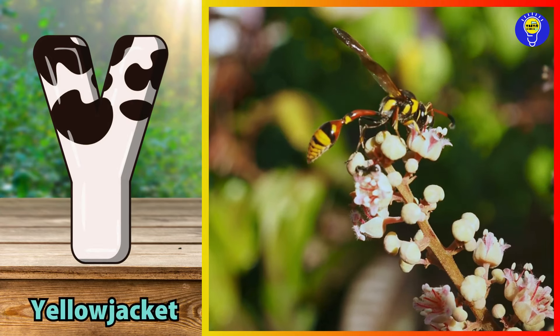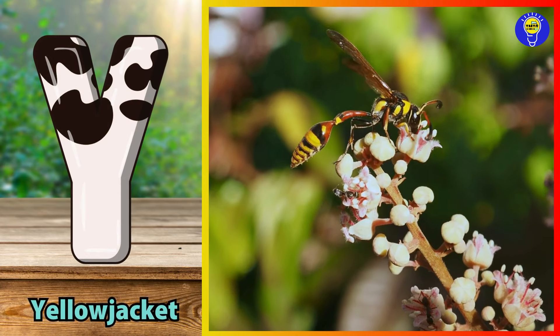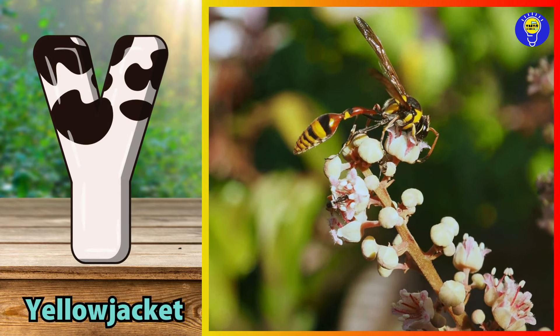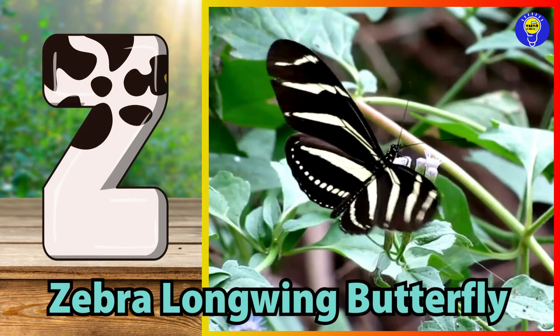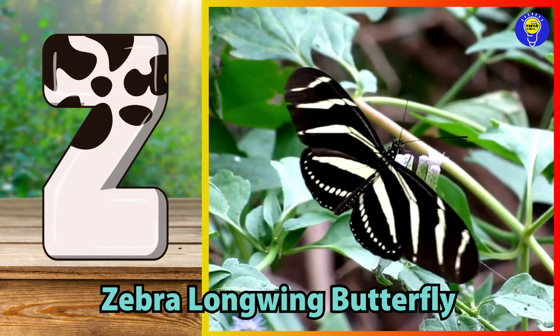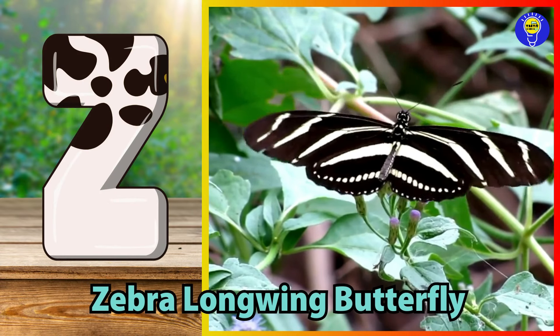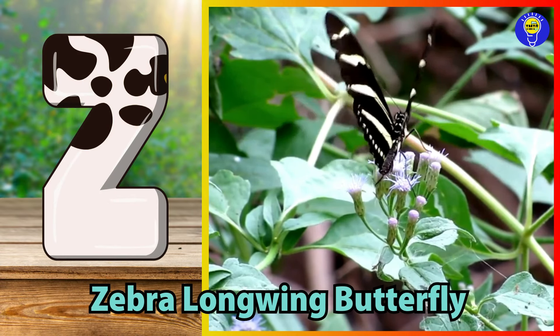Y is for yellow jacket. Y, y, yellow jacket. Z is for zebra longwing butterfly. Z, z, zebra longwing butterfly.